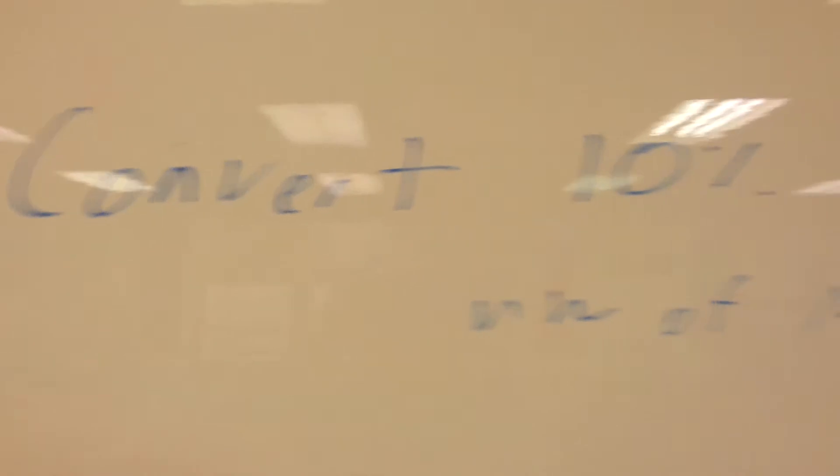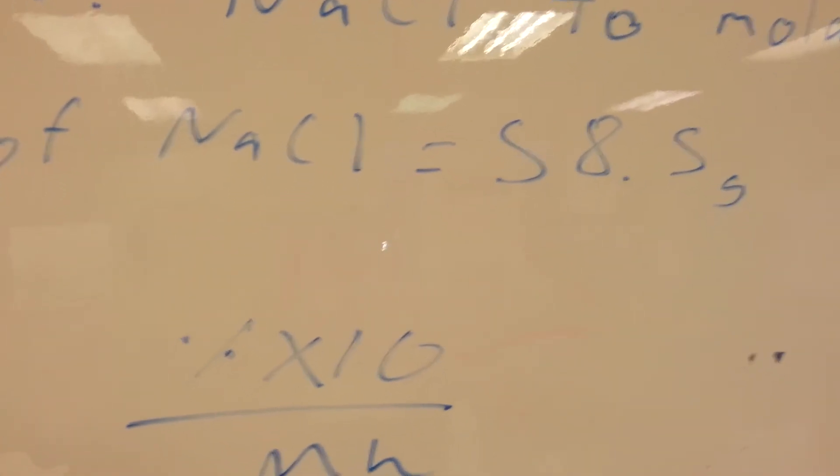So when you convert 10% sodium chloride to molarity, you get your molecular weight of sodium chloride, which is 58.5 grams. Here's your equation: molarity equals the percent, which is 10, times 10 over molecular weight.